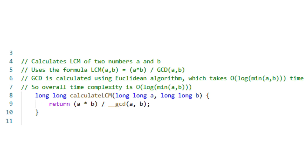First, we calculate the LCM of divisor 1 and divisor 2 using the standard formula: LCM of A and B equals A multiplied by B divided by GCD of A and B. We use the Euclidean algorithm to calculate GCD.